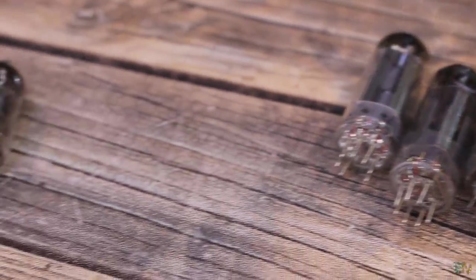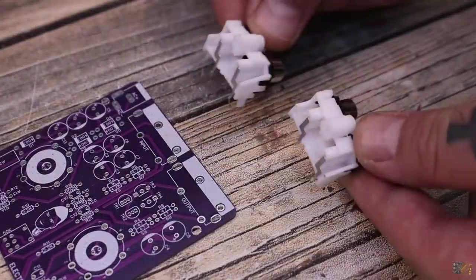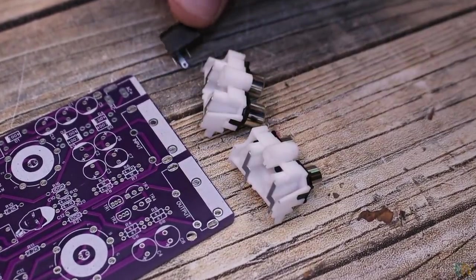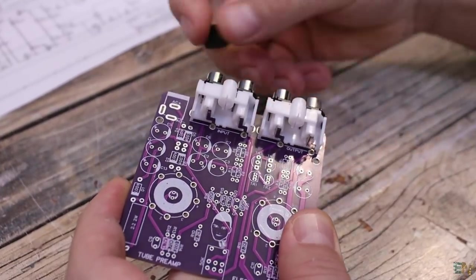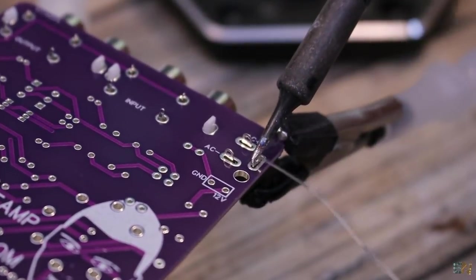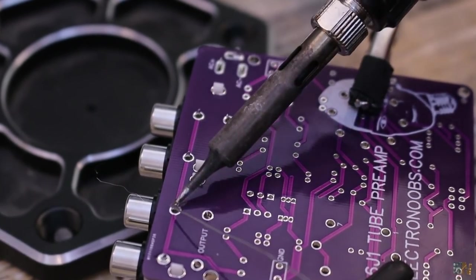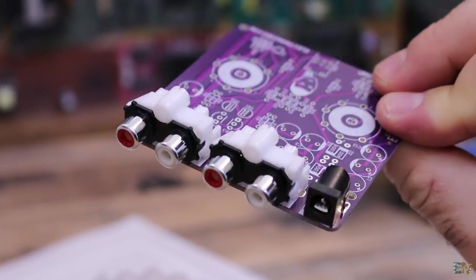So now let's assemble my PCB. If you want to make the same amplifier, you have my design and the components list below in the description. I will start by adding the input connectors. First I solder the AC input jack. Remember, this PCB will need 12V AC supply. It can't run with DC. Then I also solder in place the audio input and the output connectors.